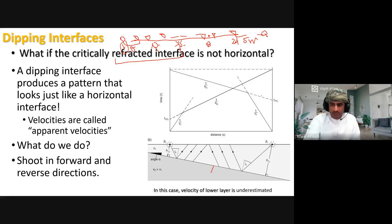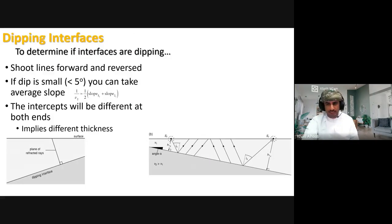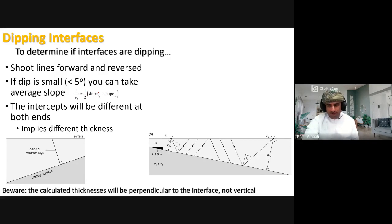If the refraction velocity from reverse and forward shots is the same, the layer is flat — as stated, if the layer is flat, forward and reverse give you the same velocity V₂. If the layer is dipping, the slope for forward is different from the slope for reverse. To get the true velocity, the simplest technique is to average both apparent velocity values.